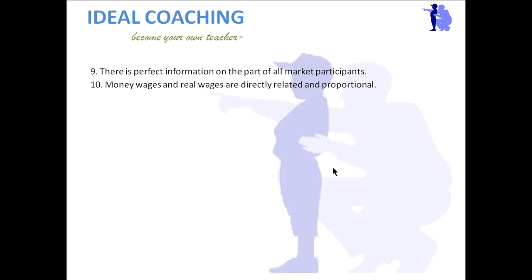This seems like a contradiction — if money wages and real wages are directly proportional, why does raising money wages decrease real wages? Actually, real wages are increasing, but not to the level we expect, because prices have risen faster. This can be understood with a diagram.